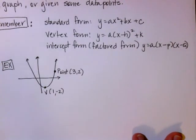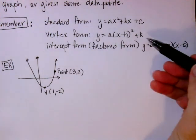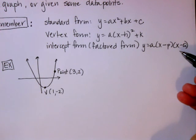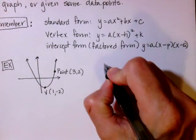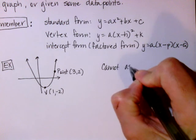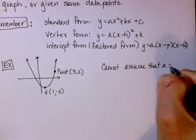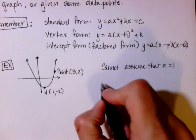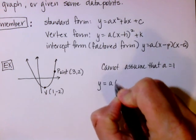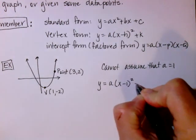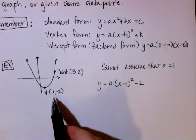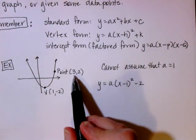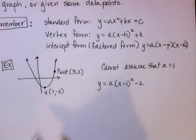Typically you're going to start either in vertex form or factored form, depending on the way they give you the information. You cannot assume that a is equal to 1, so most of the time we will have to find a first. Since I know the vertex, I'll write the equation in vertex form: y equals a times the quantity x minus 1, squared, minus 2. Now I'll substitute in the additional point for x and y so I can solve for a.